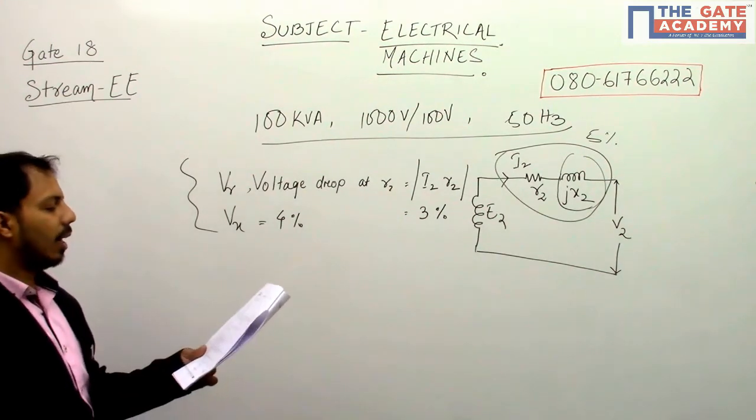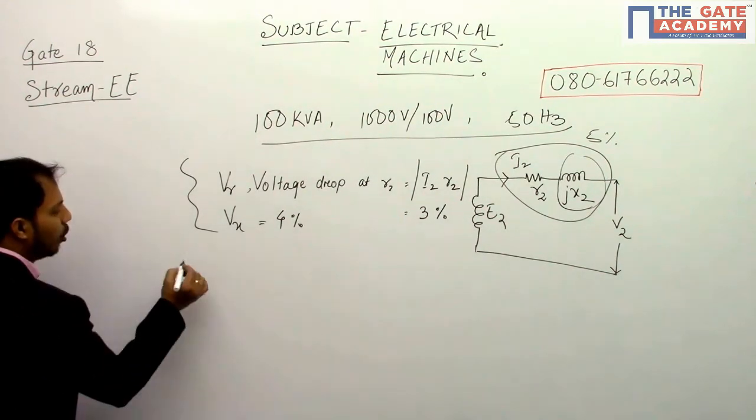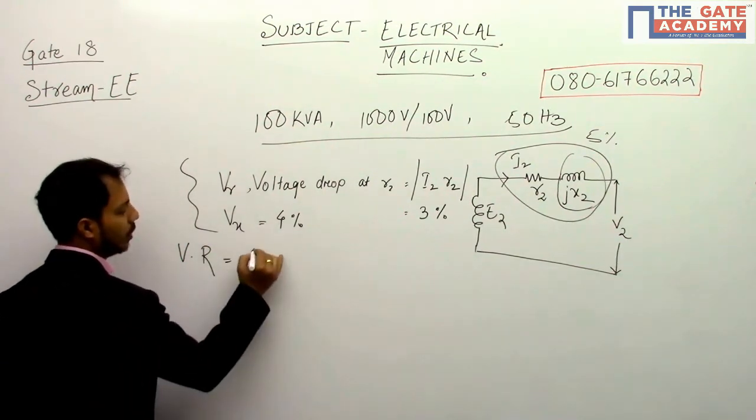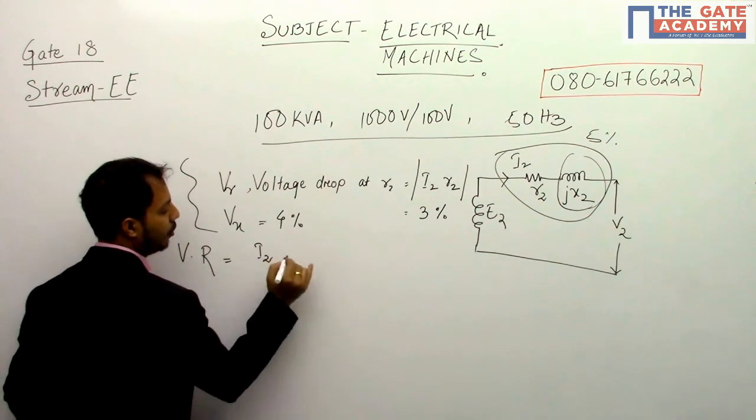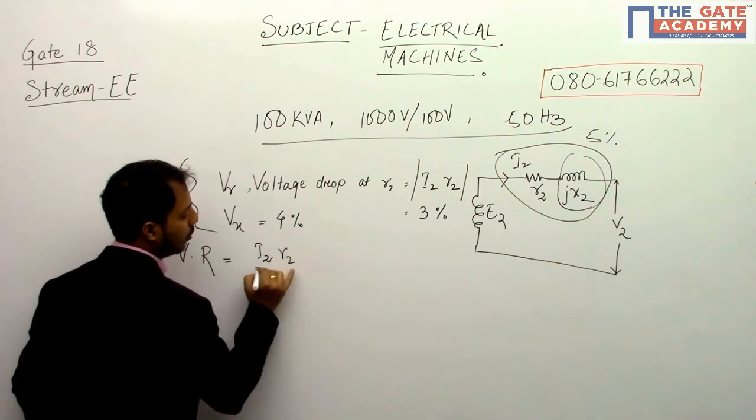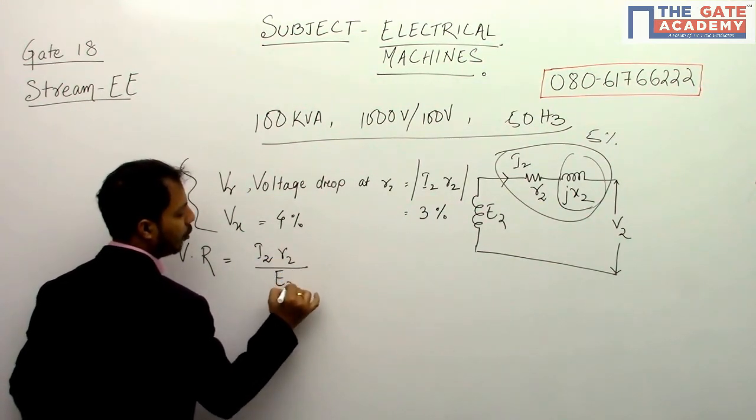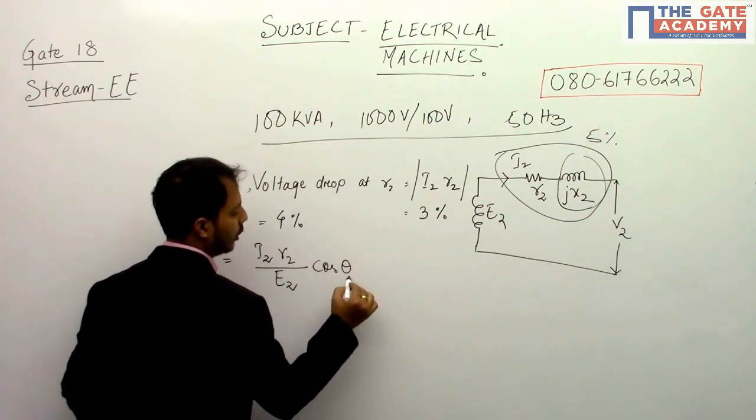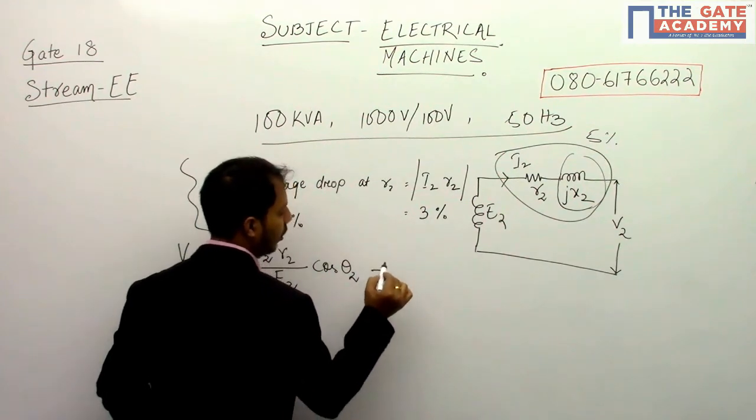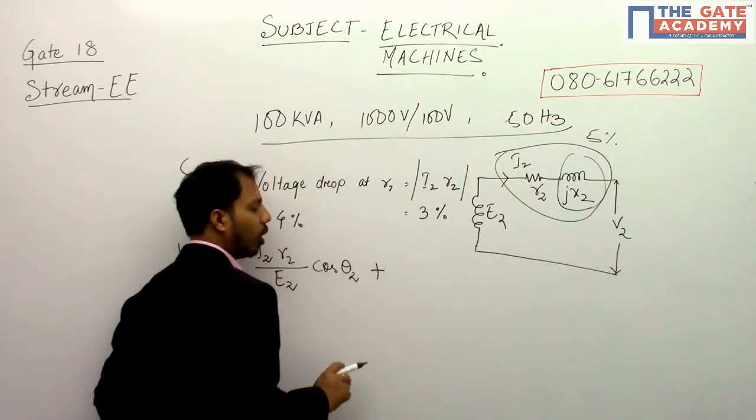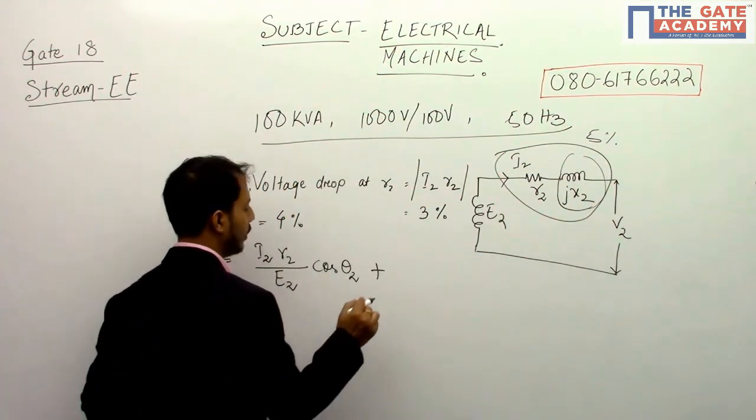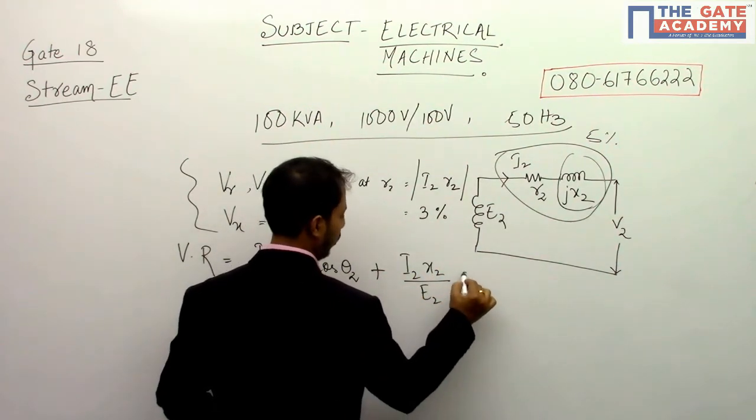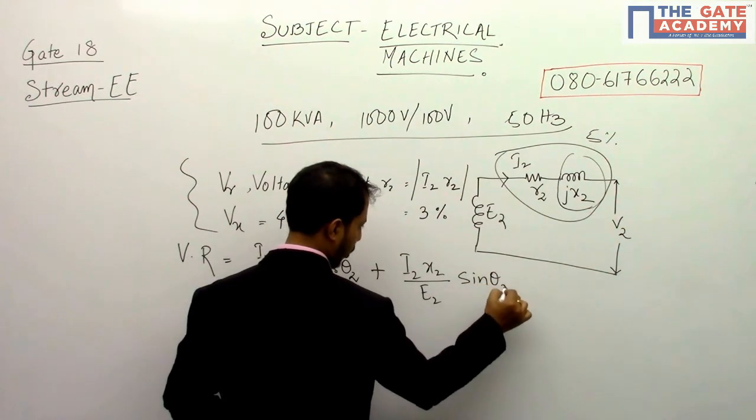So we know that voltage regulation is equal to (I2·R2/E2)·cos θ2 plus, because this is lagging, it will be plus (I2·X2/E2)·sin θ2.